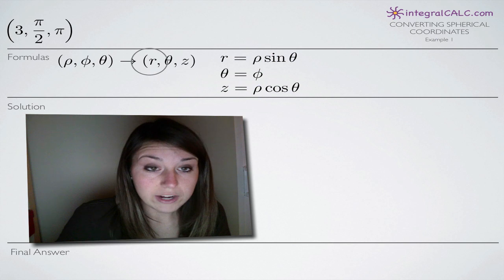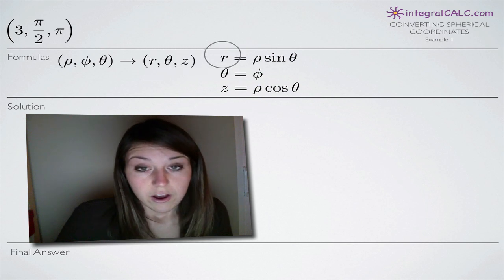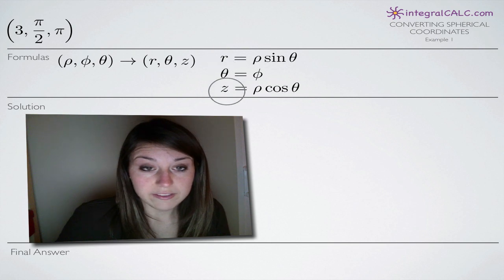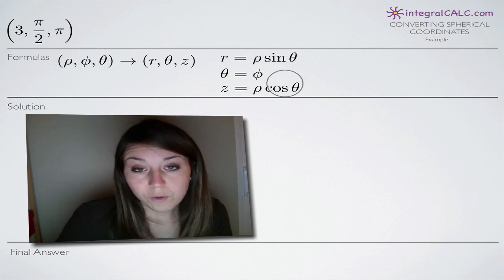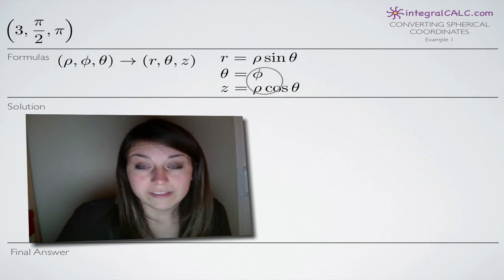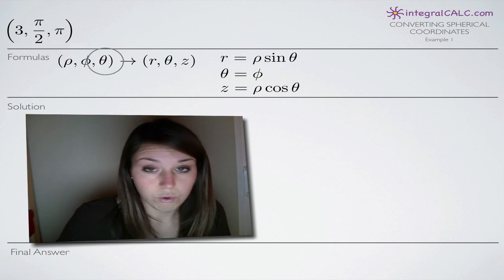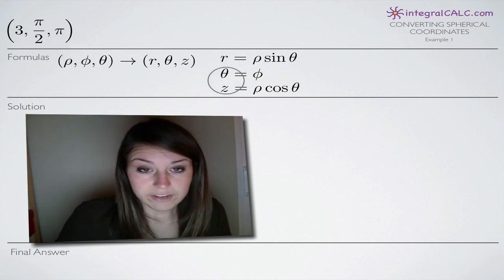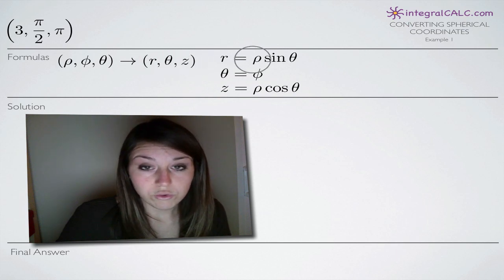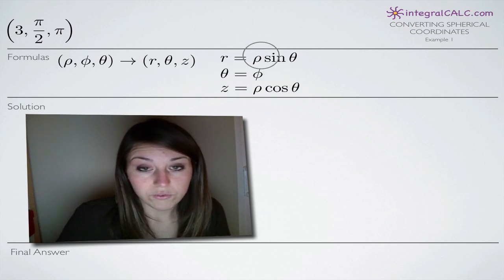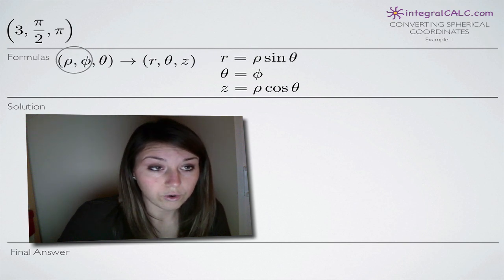And the formulas we need to find r, θ, and z are these three here. So notice that the formulas we're using will give us our cylindrical coordinates. The left-hand side here are the cylindrical coordinates that we're working toward. The right-hand side are the spherical coordinates, which we're going to get from our original spherical coordinate: in our case, 3, π/2, and π.